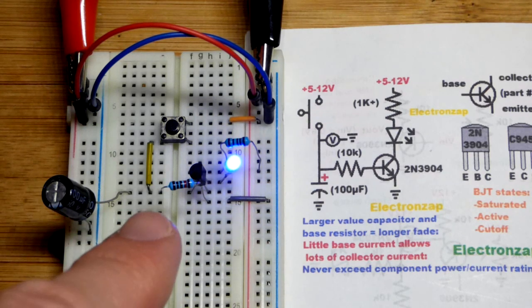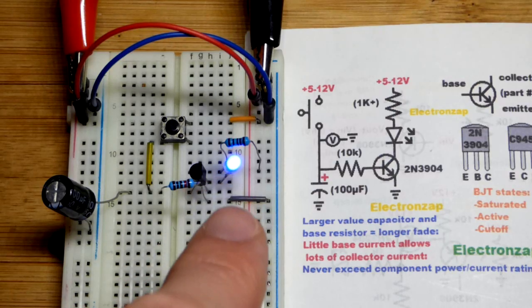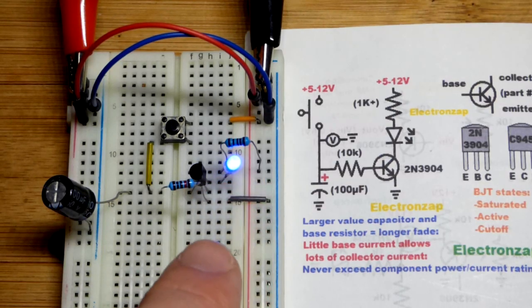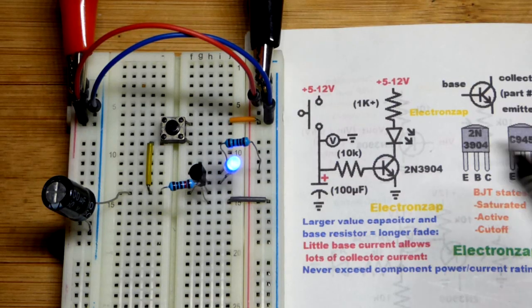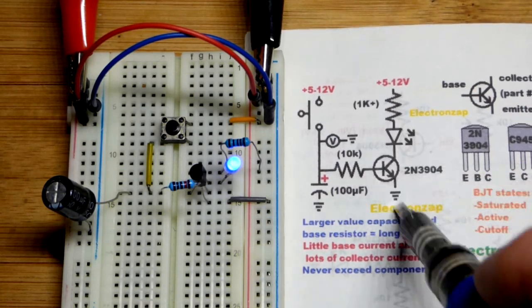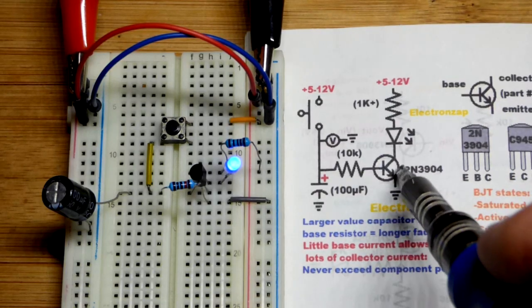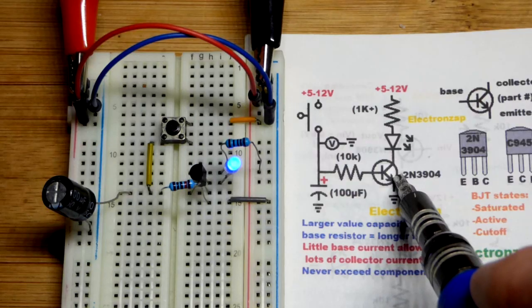100 microfarad. And actually we don't have a long time that we can do this. Although that's going to look like it's on a long time, it's actually fading down. And we got a 10K resistor right there. So you need a small amount of base to emitter current to get many times, maybe it's 100 times, maybe it's 200 times. Also varies a bit as the temperature of the transistor changes and stuff. It's not perfect.